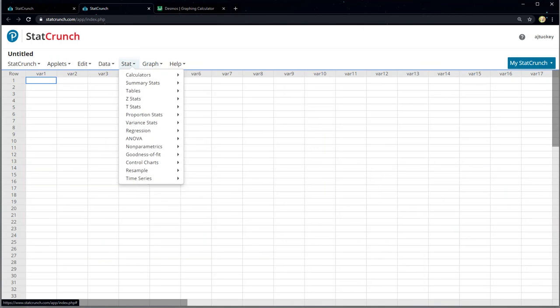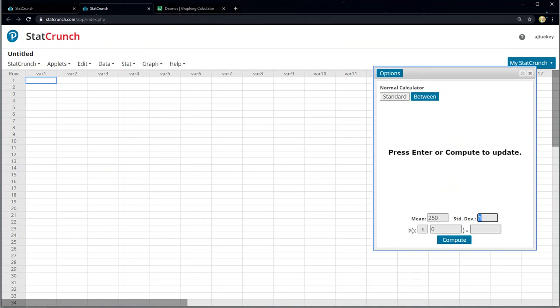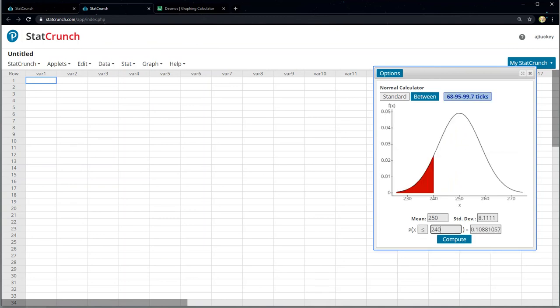Now I'll show that in StatCrunch. In StatCrunch, you go to Stat, Calculators, Normal, because this is a normal curve. We just proved it in part A. So the mean is 250. The standard deviation, even though it says standard deviation, we want to put in the standard error, which was 8.111111. And we want probability less than 240. Enter. And that graph should match the graph that you drew on your paper. If not, you've done something wrong. Double check it. And sure enough, we get 0.1088. Works out beautifully.